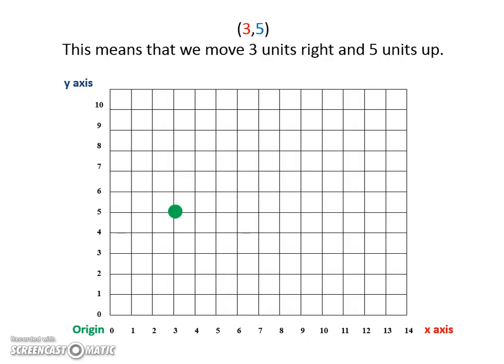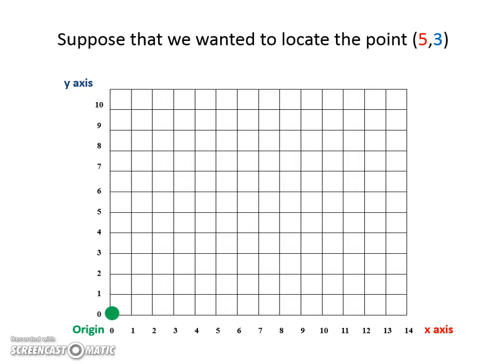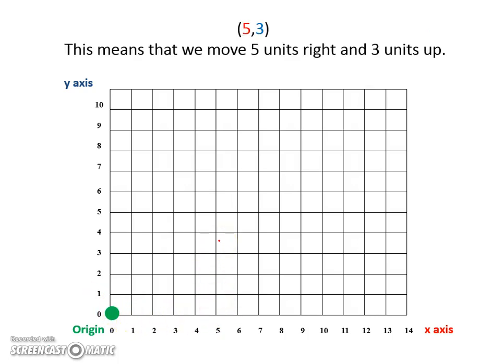Once you've got your point plotted, you have to label it. For this lesson, we're going to label it with the ordered pairs, but you will see later on in class, you might choose to use a variable to label your points. Let's try another one. What if we wanted to plot (5, 3)? Well, this means I'd have to walk over to elevator 5 and go up 3, and then label my point.